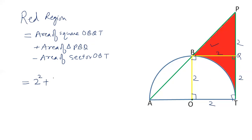This triangle PBQ, half base into height. Now, sector OBT. This is 90 degree angle. So basically, this is a quadrant. Area of quadrant is 1 by 4 pi R squared and radius is 2. So, this becomes 2 squared is 4, plus half times 2 times 2 is 2, minus 1 by 4 pi into 2 squared. 4 plus 2 is 6, minus 1 by 4 pi into 4. 4 cancels out. Area of red region is 6 minus pi square cm.